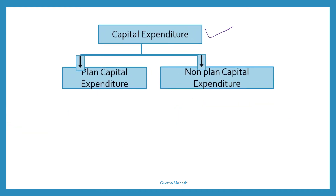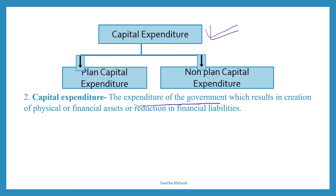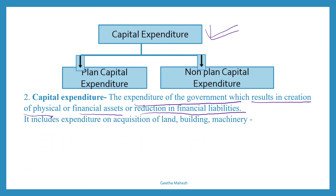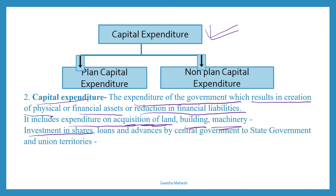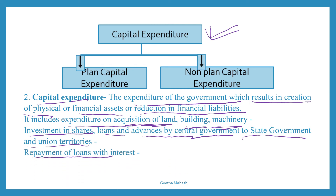Now let us discuss capital expenditure. Capital expenditure is the government expenditure which results in creation of physical or financial assets, or reduction in financial liabilities. Capital expenditure includes expenditure on acquisition of land, building, machinery, etc., or investment in shares, loans and advances by the central government to state governments and union territories, or repayment of loans with interest.